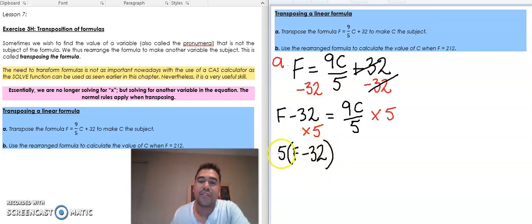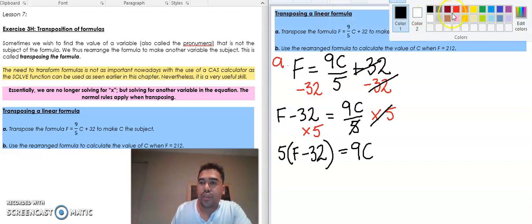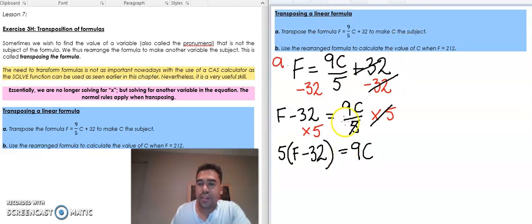The right hand side, those get cancelled out, and we're left with just nine times C. And then the last step, we have this nine times C, so the opposite of times by nine is divided by nine. Now notice here I'm dividing the whole thing here by nine.